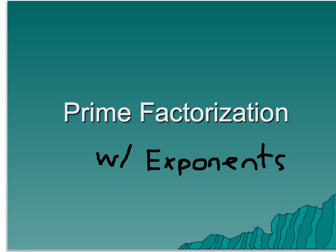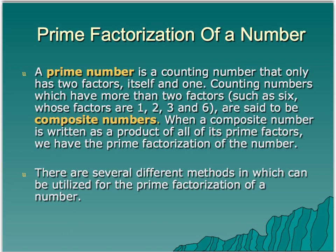Let's take another look at prime factorization, this time with exponents. A prime number is a counting number that only has two factors — itself and one. Counting numbers which have more than two factors, such as six, whose factors are one, two, three, and six, are said to be composite numbers. A composite number written as a product of all of its prime factors gives us the prime factorization of the number. There are several different methods that can be used for prime factorization.